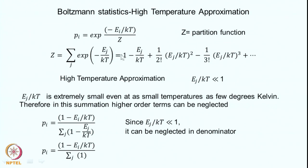The magnetic moments of nuclei are generally so small that these interaction energies are extremely small compared to kT. Therefore, in the exponential expansion which goes to infinity, the higher-order terms do not contribute significantly. This is called the high-temperature approximation: E_j over kT is far less than 1, so one can neglect the higher-order terms in the expansion for Z.